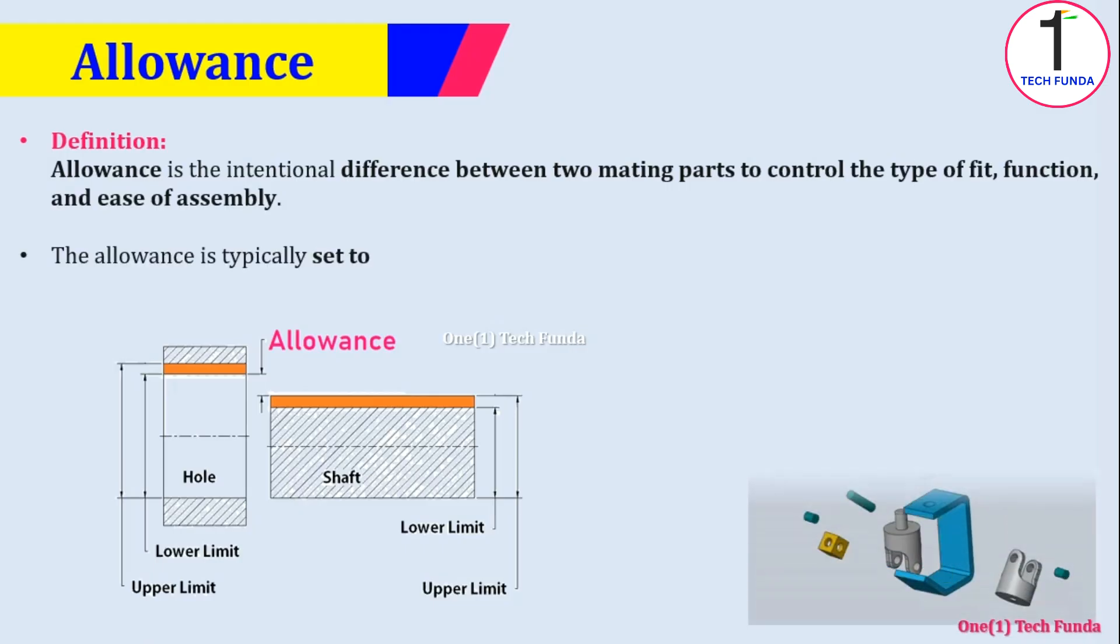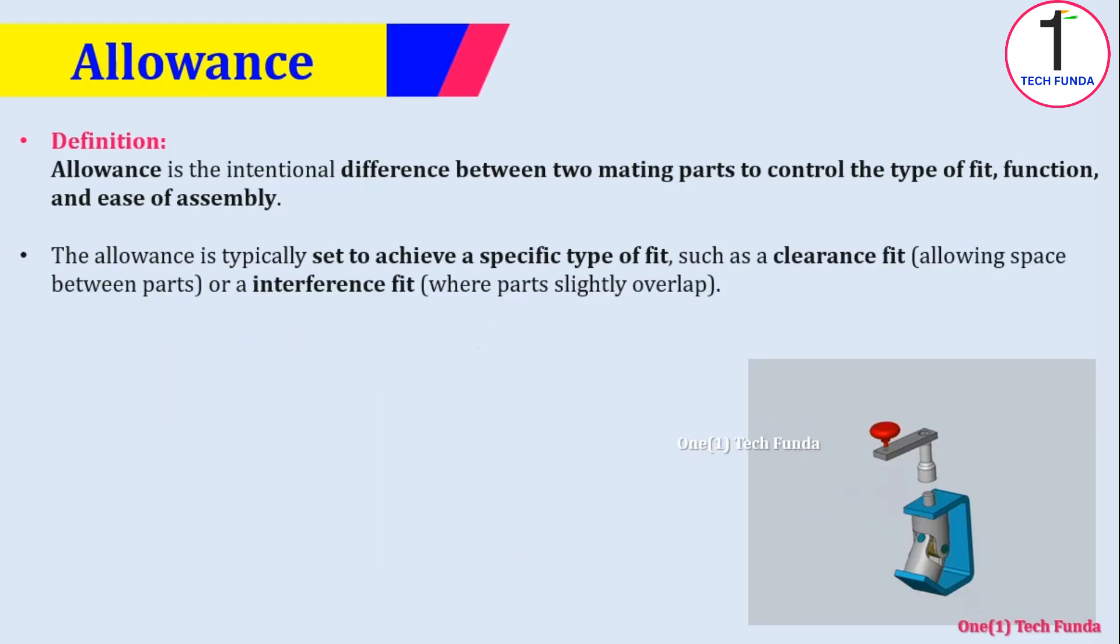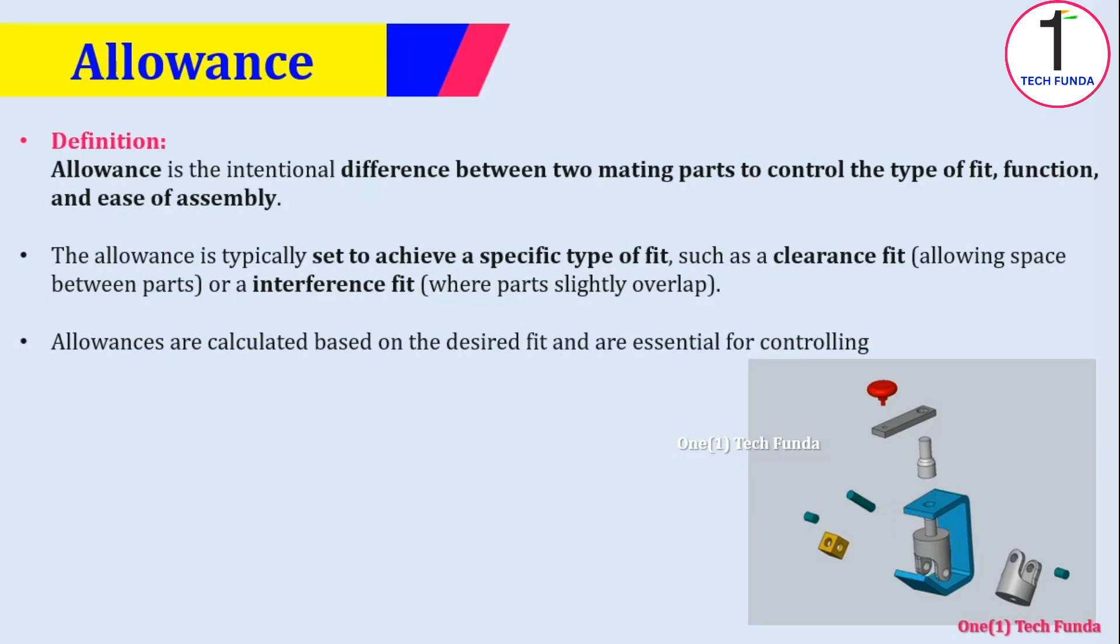The allowance is typically set to achieve a specific type of fit, such as a clearance fit allowing space between parts, or an interference fit where parts slightly overlap. Allowances are calculated based on the desired fit and are essential for controlling quality and performance in mechanical systems.